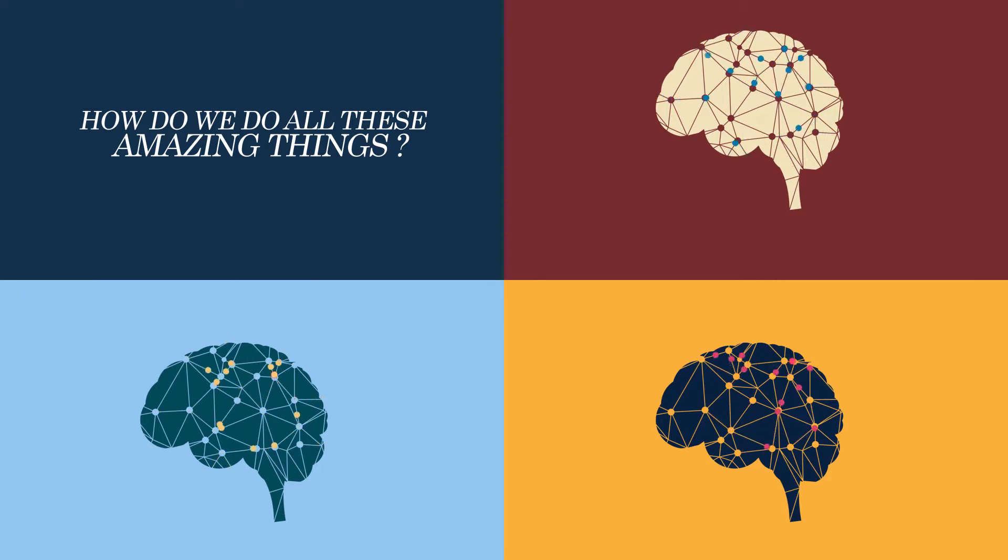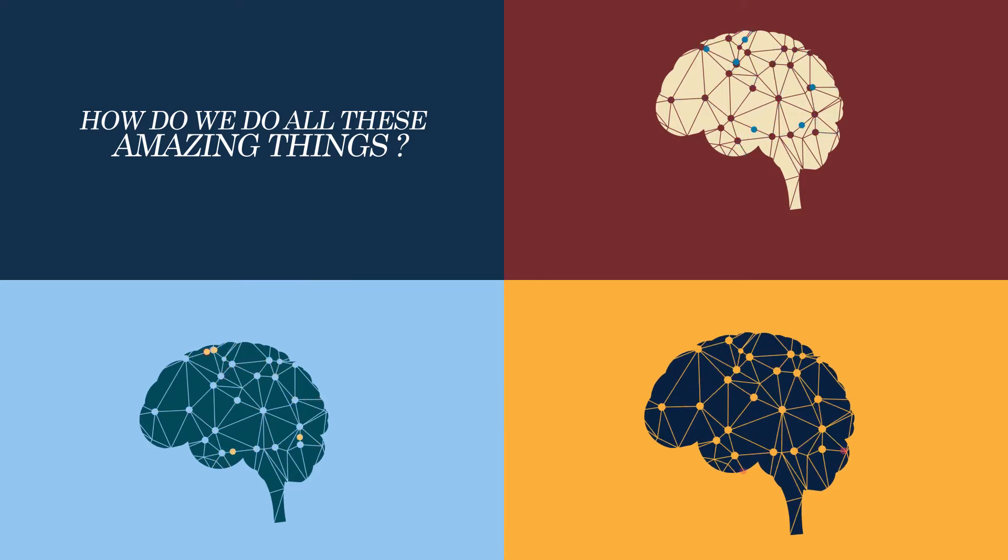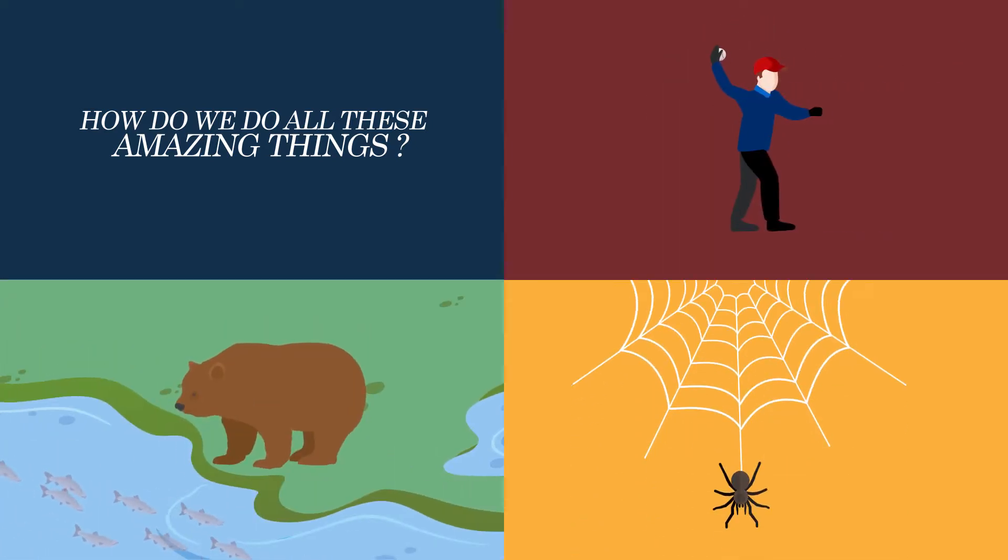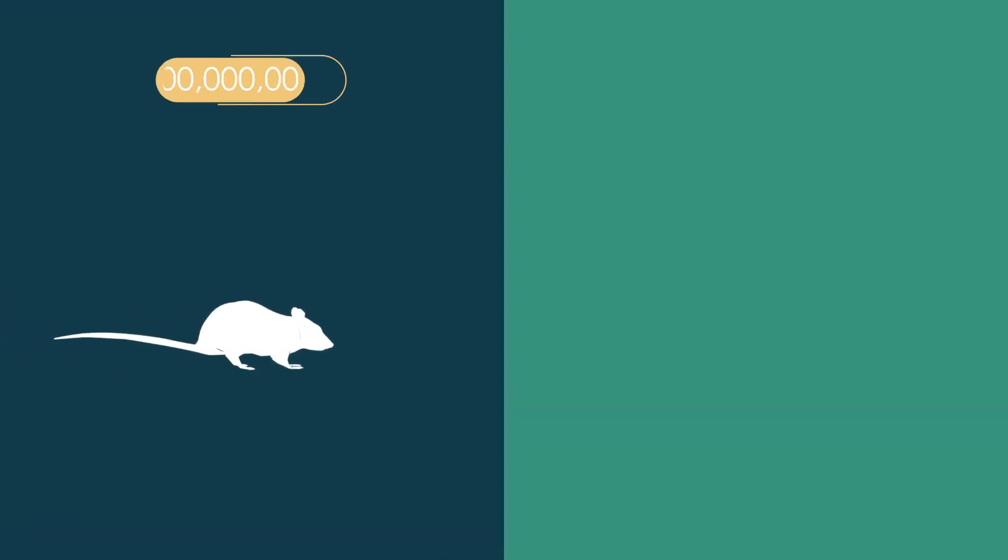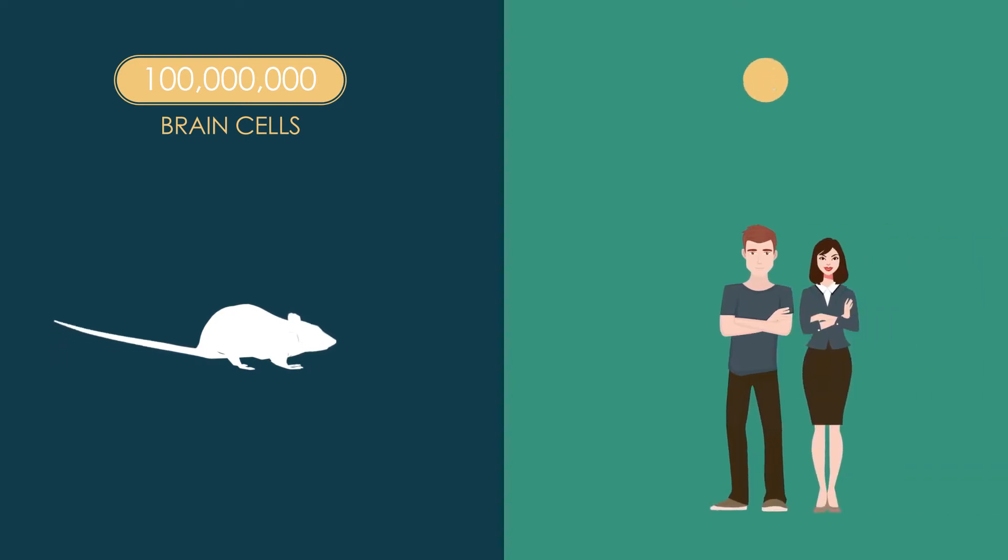Behavior is so diverse, adaptive, and effective. It is not surprising that the device controlling it is incredibly complex. Even a little mouse has a hundred million brain cells, and we have a hundred billion.